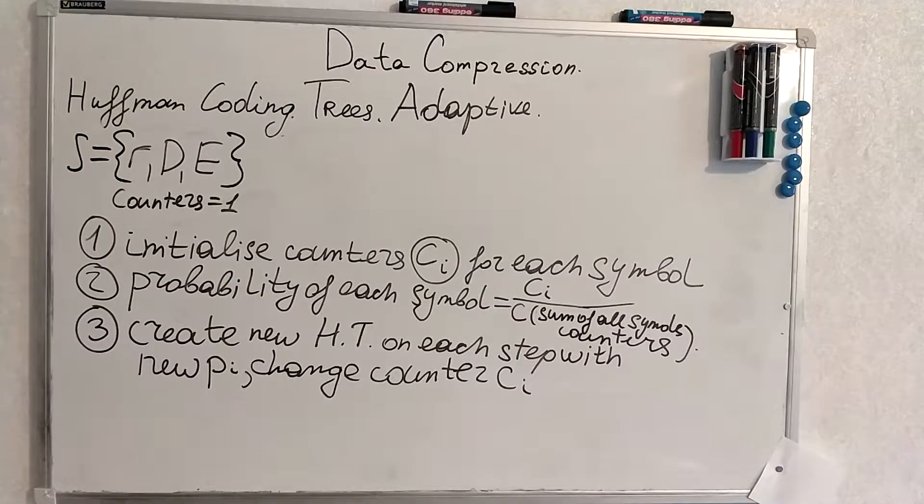So we initialize counters. All the counters can be given if you are making some task. We initialize counters ci for each symbol. Probability is becoming the counter of the symbol divided by total counter.